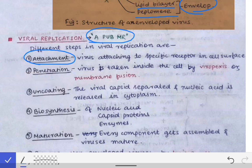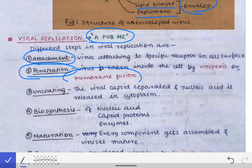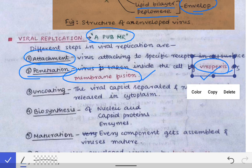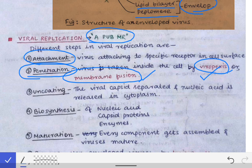The next step is penetration, meaning the entry of the virus inside the host cell. This entry occurs either by membrane fusion or by viropexis. Membrane fusion occurs only in the case of enveloped viruses — the lipid bilayer of the virus fuses with the host cell membrane, allowing the nucleocapsid to enter the cytoplasm. Viropexis is similar to phagocytosis and occurs in non-enveloped viruses.